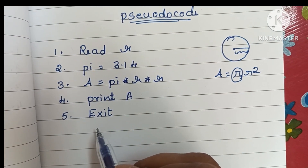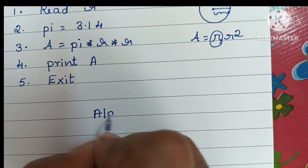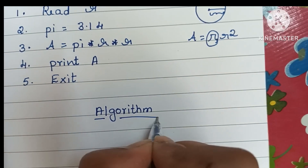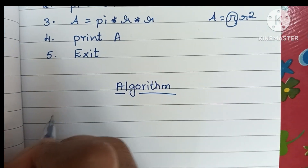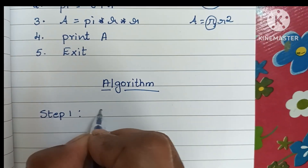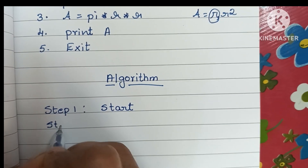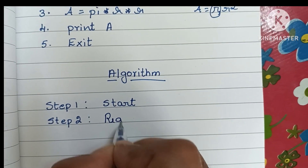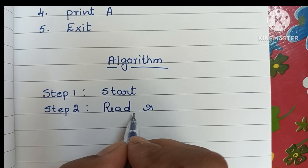Next is the algorithm. An algorithm is a step-by-step process to solve a problem. We have to follow some rules: an algorithm always starts with a start statement. So step one is start, and step two is to read the input value — read r, the radius of the circle.